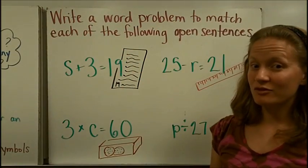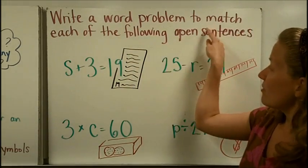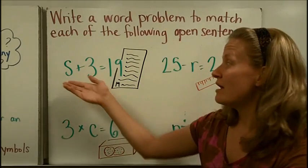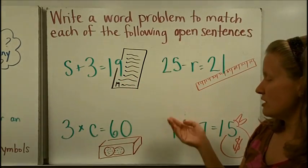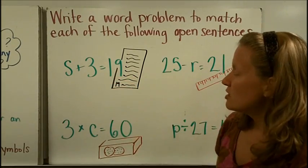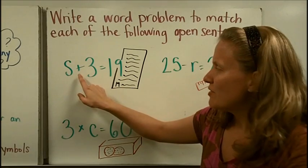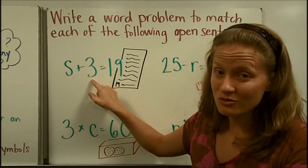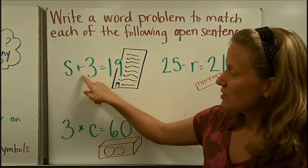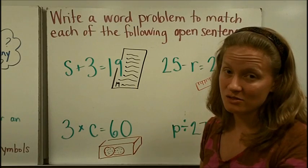One of the things you're going to have to do, now that you know about variables and open sentences and expressions, is to write a word problem to match each of the following open sentences. So you can be given an open sentence and asked to create your own story that would make sense with this. Let's pretend you had some amount of students in your class. You weren't sure how many it was. But then one day you all of a sudden had three new students join your class. And your teacher said, wow, now we have 19 students. You could use the open sentence S plus 3 equals 19 to say we started with some unknown amount, we got three more, and now we have 19 students altogether.